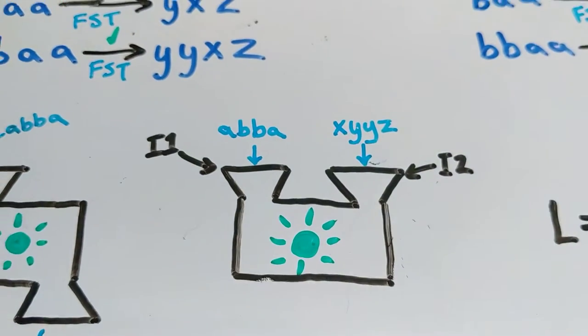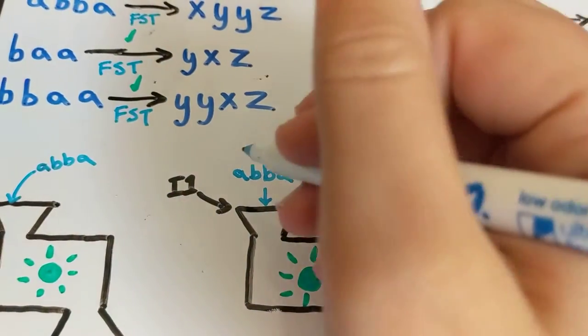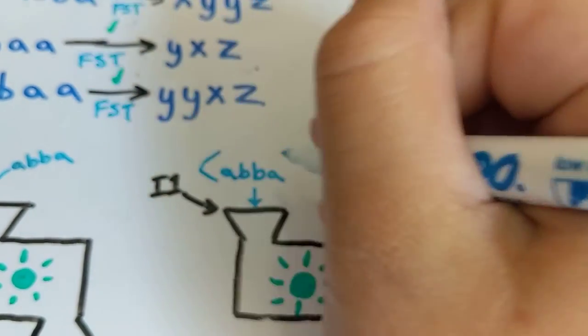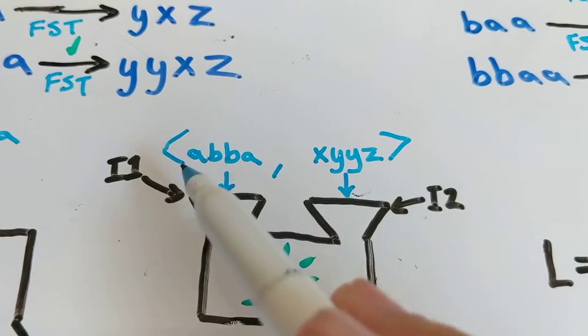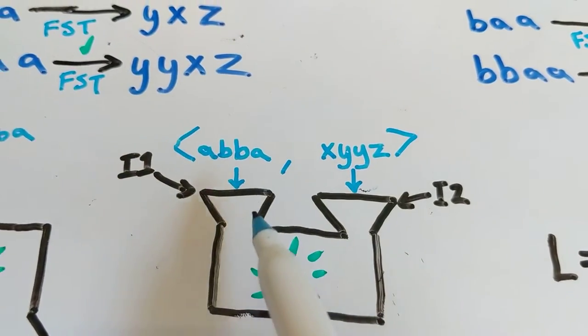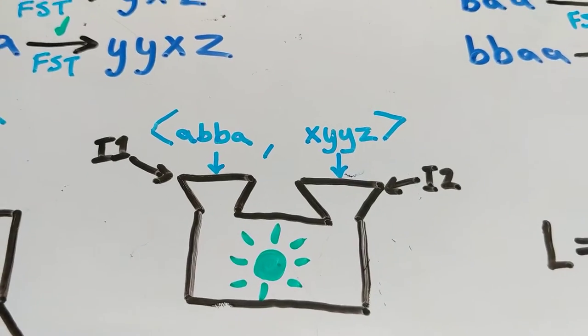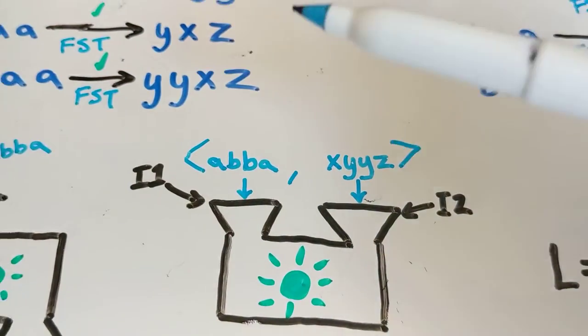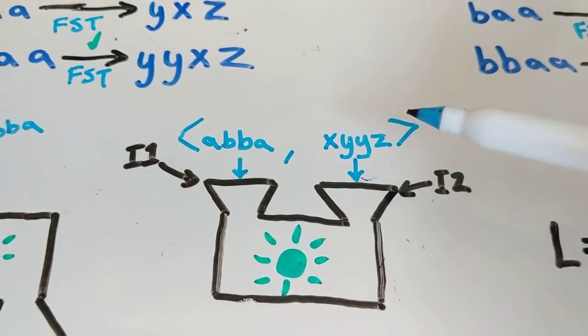Essentially what we're doing when we do this is we're saying do we like this ordered pair of elements, this ordered pair of strings. It has to be ordered because they're coming in through specific slots but you can't put either one through either slot. Do we like this pairing together of these two strings.